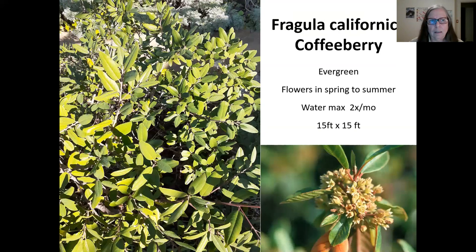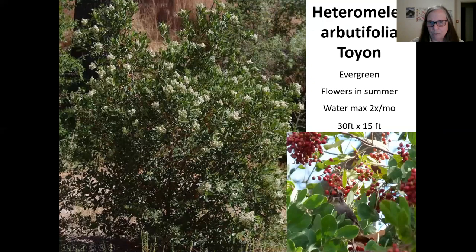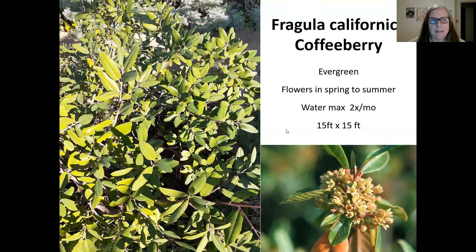The coffee berry is evergreen and flowers in the spring, though the flowers blend in with the foliage and are hard to see. It does produce berries; however, it's not recommended to use for coffee as they have a slight amount of poisonous qualities that can upset your stomach. Watering is only about twice a month during the summer. It can get 15 feet by 15 feet. It's good for trimming — you can shape it as a shrub or even a hedge.